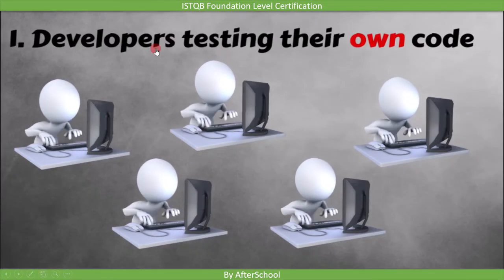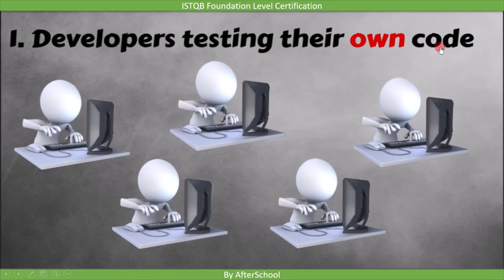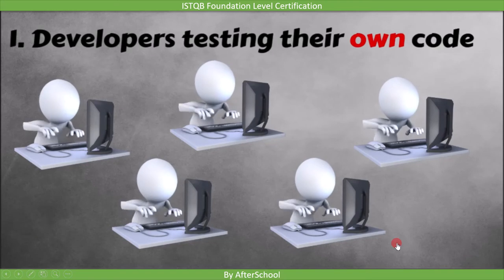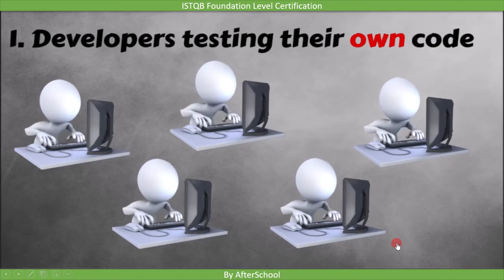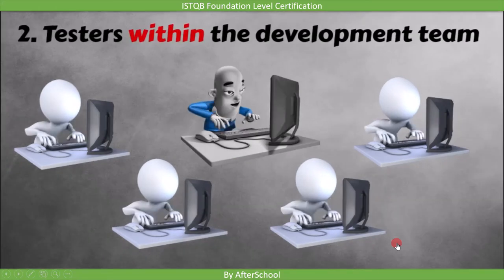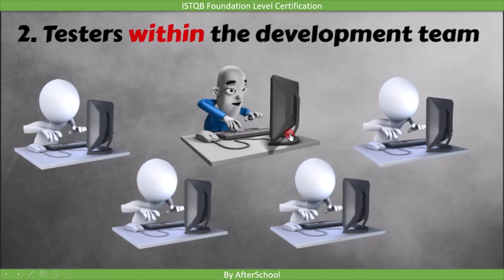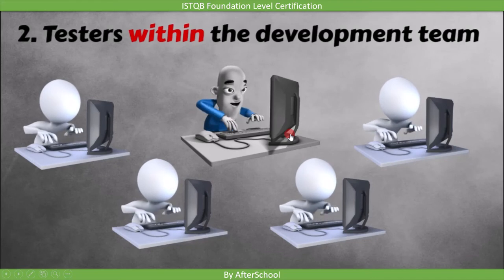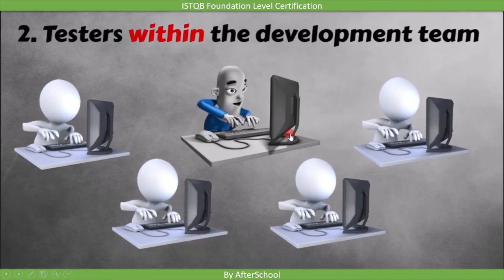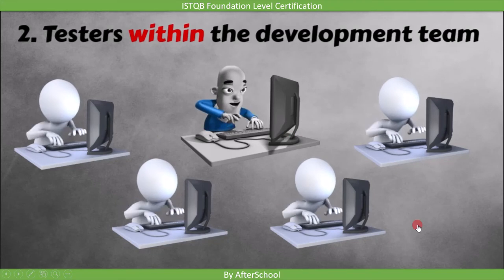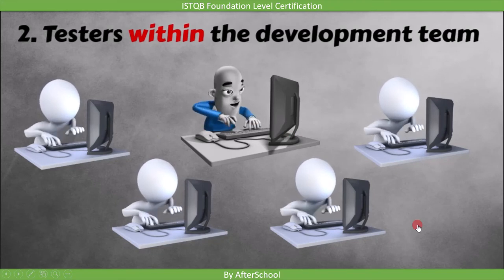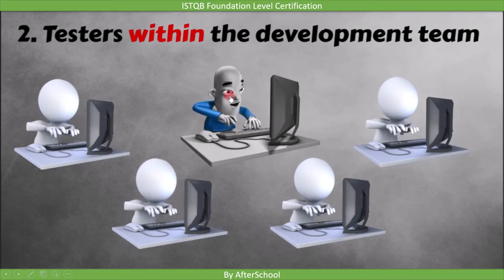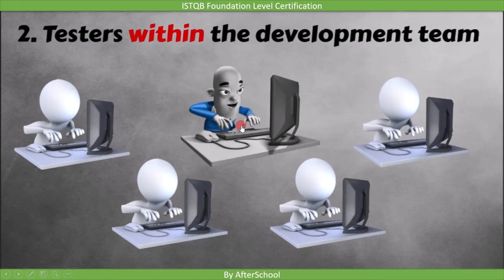The first example is a developer testing their own code. The second example is a tester within the development team. Here we have a team that consists of both tester and developer. In this case, the degree of independence is more because the developer implements the code but testing is not done by them — testing is done by the tester. So the degree of independence is more compared to the first example.